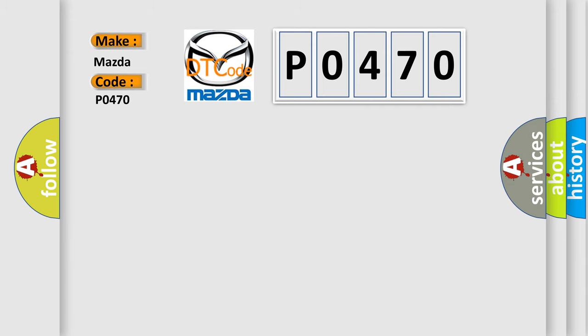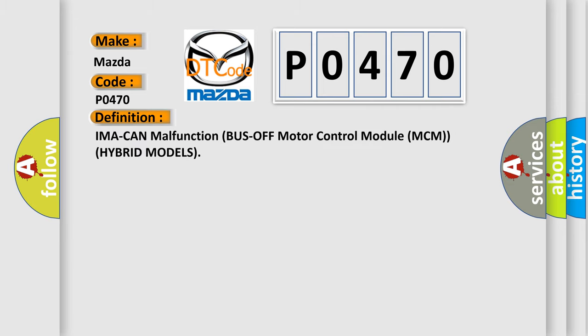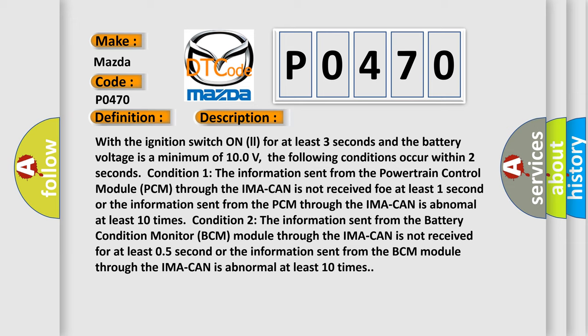The basic definition is: IMA CAN malfunction — Bus off motor control module (MCM), hybrid models. With the ignition switch on for at least 3 seconds and battery voltage at a minimum of 100 volts, the following conditions occur within 2 seconds. Condition 1: The information sent from the powertrain control module (PCM) through the IMA CAN is not received for at least 1 second, or the information from the PCM through the IMA CAN is abnormal at least 10 times. Condition 2: The information sent from the battery condition monitor (BCM) module through the IMA CAN is not received for at least 0.5 seconds, or the information from the BCM module through the IMA CAN is abnormal at least 10 times.